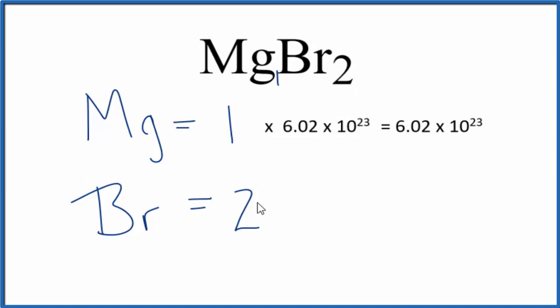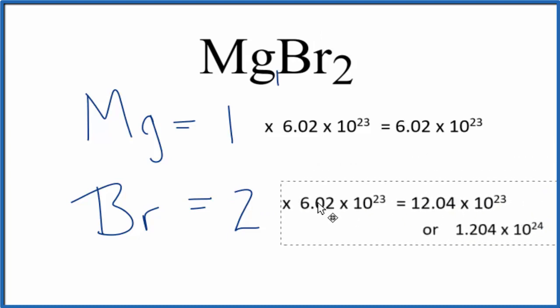For the bromine, we have two bromine atoms. So two times Avogadro's number, that gives us the number of bromine atoms in one mole of magnesium bromide.